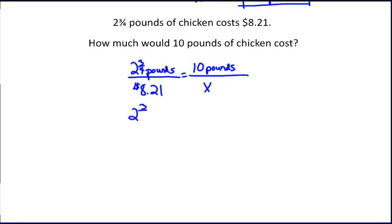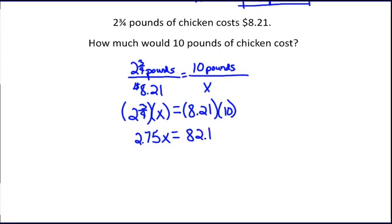Multiplying 2 and 3/4 by x and setting that equal to 8.21 times 10, we can solve our proportion. Since this proportion has both fractions and decimals, I'm going to take my 2 and 3/4 and change it to 2.75.